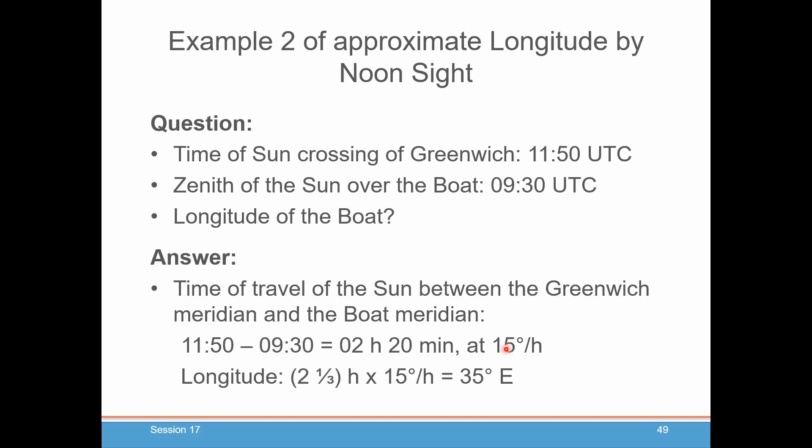Let's take another example. This time, the time of the sun crossing was 1150 UTC. You measured the zenith — the highest point the sun was over your boat — at 0930 UTC. So what's the longitude of the boat? The time of travel is the difference between the larger and smaller numbers: two hours and 20 minutes, or two and a third hours. At 15 degrees per hour, that comes out to 35 degrees. It's east because the sun crossed your boat meridian before it crossed the Greenwich meridian, so you were east of Greenwich.